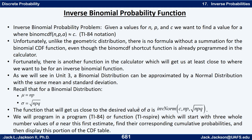For a normal distribution, it's used so much that there's a built-in inverse probability function. We're going to use this inverse norm — you put in the cumulative probability C, the mean which is NP, and the standard deviation which is the square root of NPQ. That's going to give us at least an output value that's close to the A that we want.